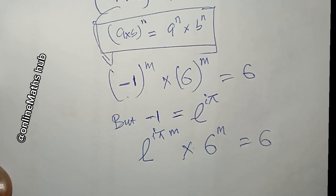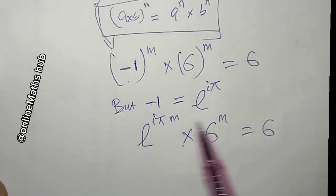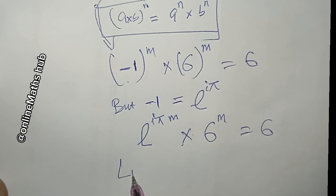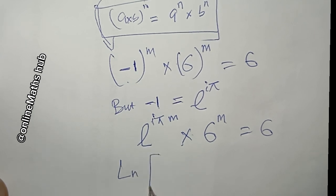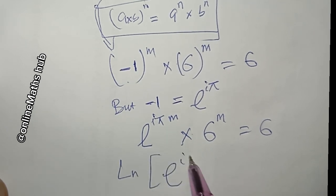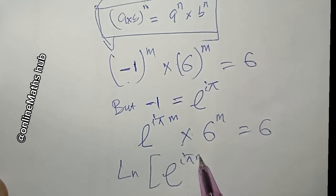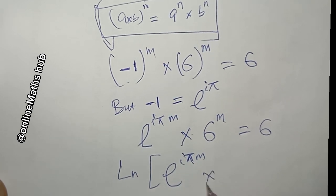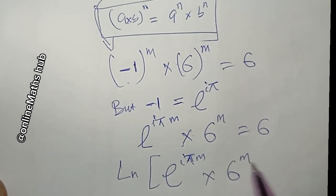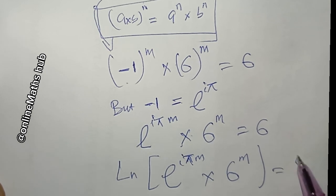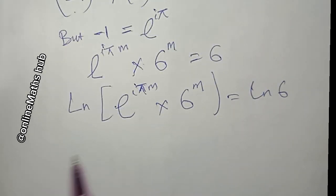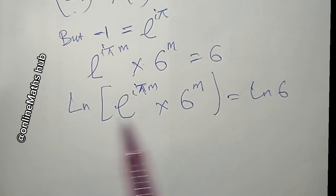Next, I'm going to take the natural log of both sides so I can bring down these powers. So I have the natural log of e to the power i·π·m multiplied by 6 to the power m, equal to the natural log of 6.